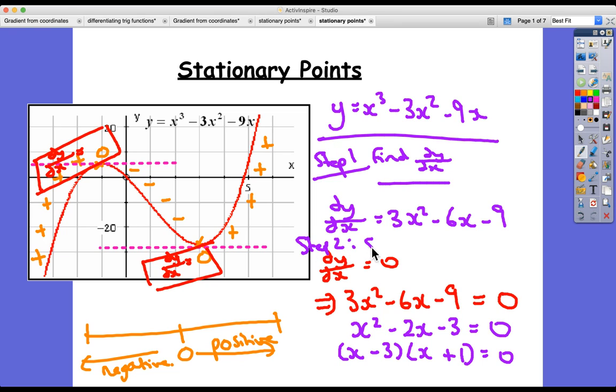Now we're not quite there yet. Step 2 here: set dy/dx equal to zero. Step 3 now is to find the x coordinates. So from here, x coordinates: what value of x would make this bracket equal zero? It would be x equals 3, and which value of x would make this bracket equal to zero? It'd be -1.